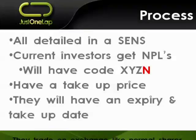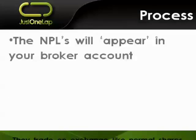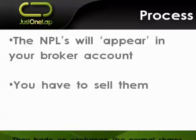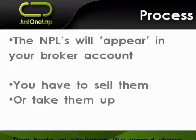There's an expiry and take-up date, and the dates are very important. If you don't do anything, you simply lose your nil paid letters. They will appear in your brokerage account — suddenly one day you would log on or phone your broker and there would be nil paids. My advice is: if you own a company, keep an eye on the SENS announcements so you know what's happening and therefore you know when nil paid letters are coming. You either have to sell them on the open market or take them up. If you don't sell them and don't take up the right to buy new shares, they expire, they lapse, they have no value.